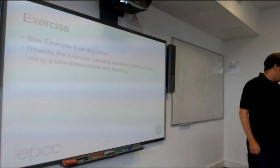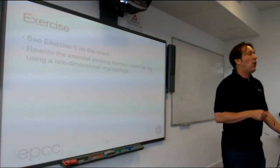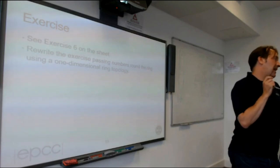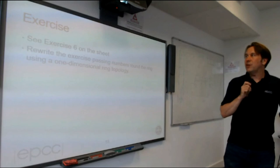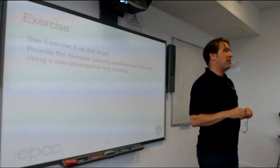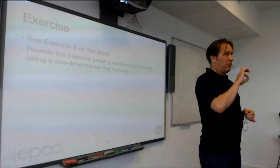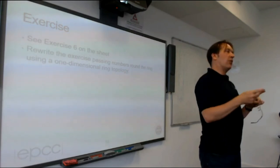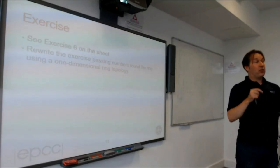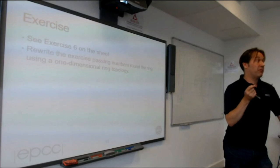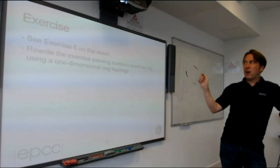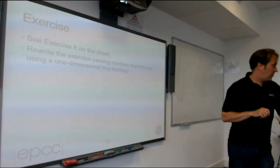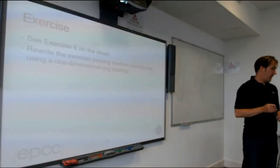Exercise 6 is slightly contrived because in one dimension, working out your neighbours isn't that hard — rank plus one, rank minus one, with a bit of modulo arithmetic isn't rocket science. But it is a useful programming exercise to create a Cartesian topology and calculate your neighbours using MPI_Cart_shift. If you specify the boundary conditions correctly, it will handle them for you. There's also an additional exercise letting you play with different boundary conditions and observe the different results. However, if you haven't completed the message around the ring, complete that first — this is really an extension to it.